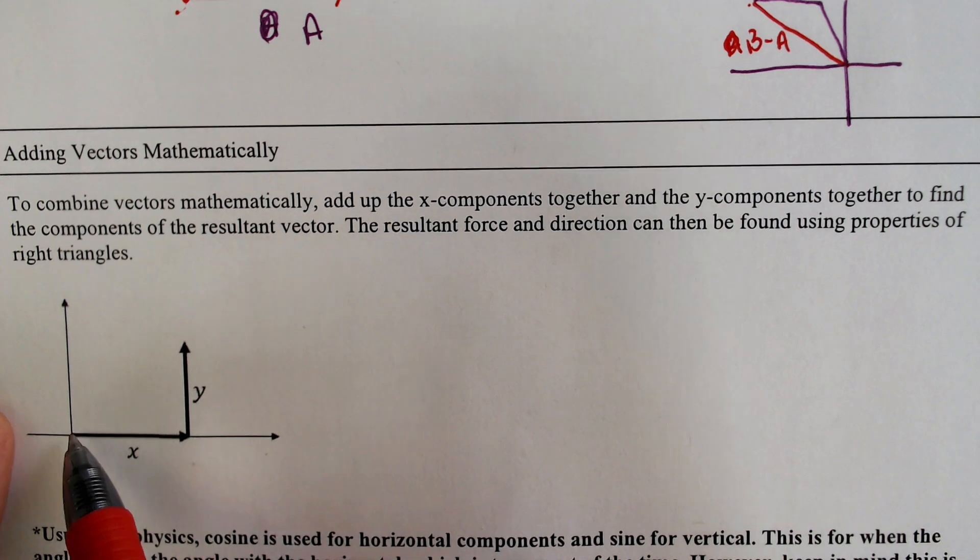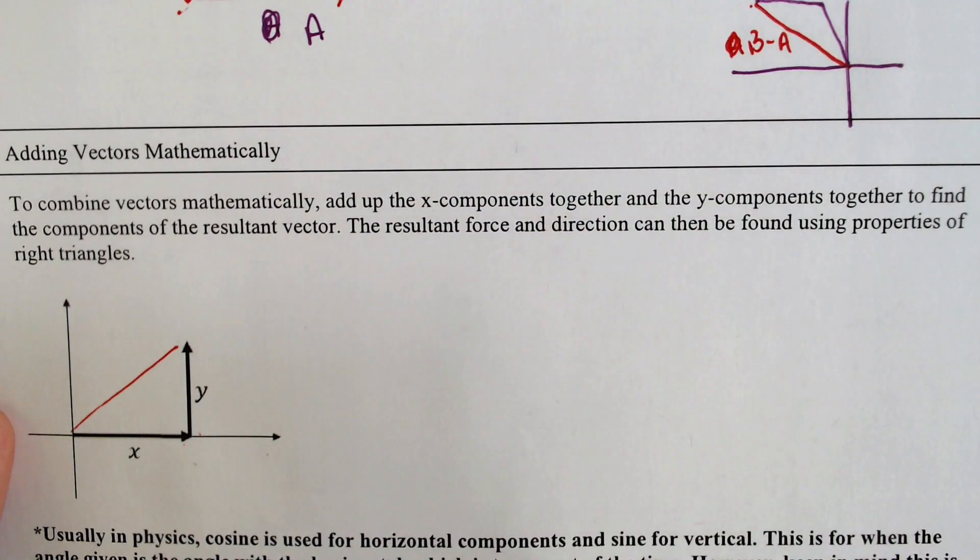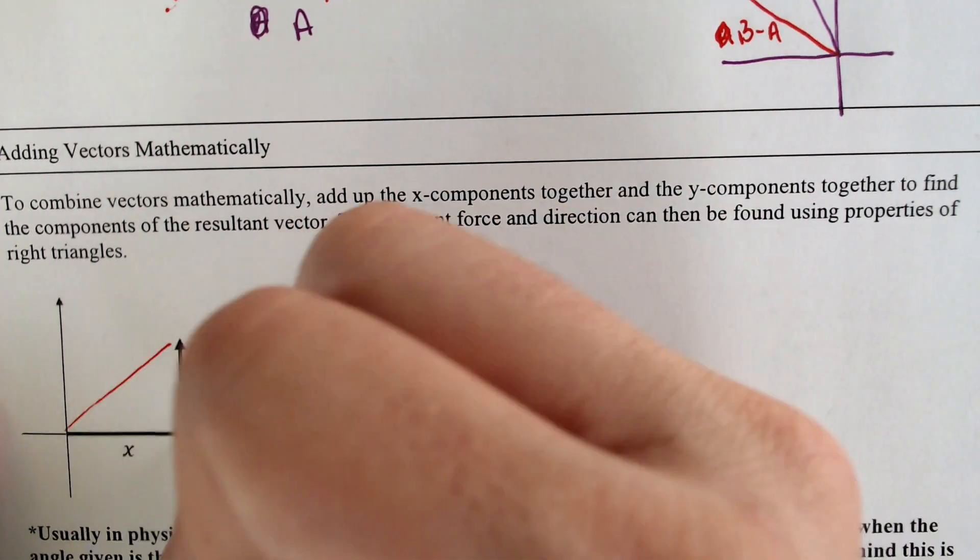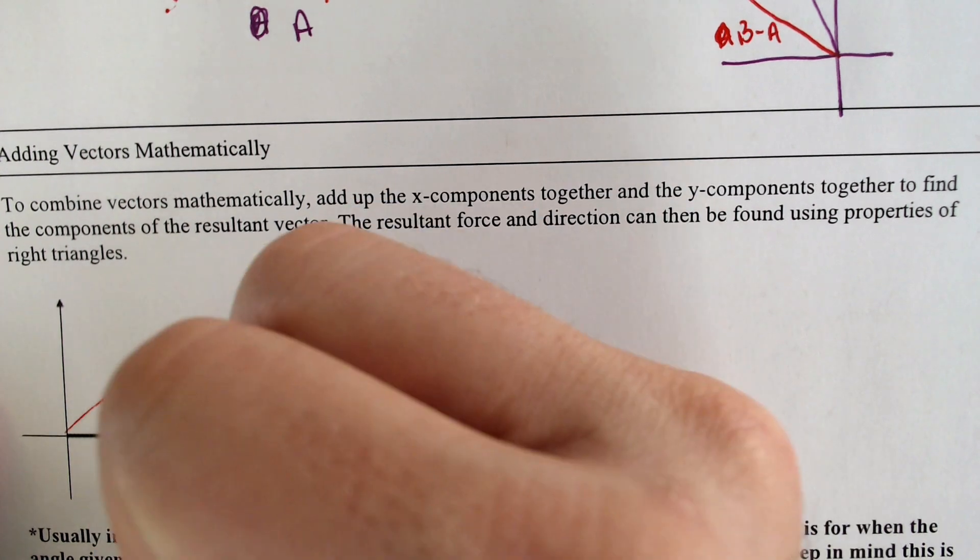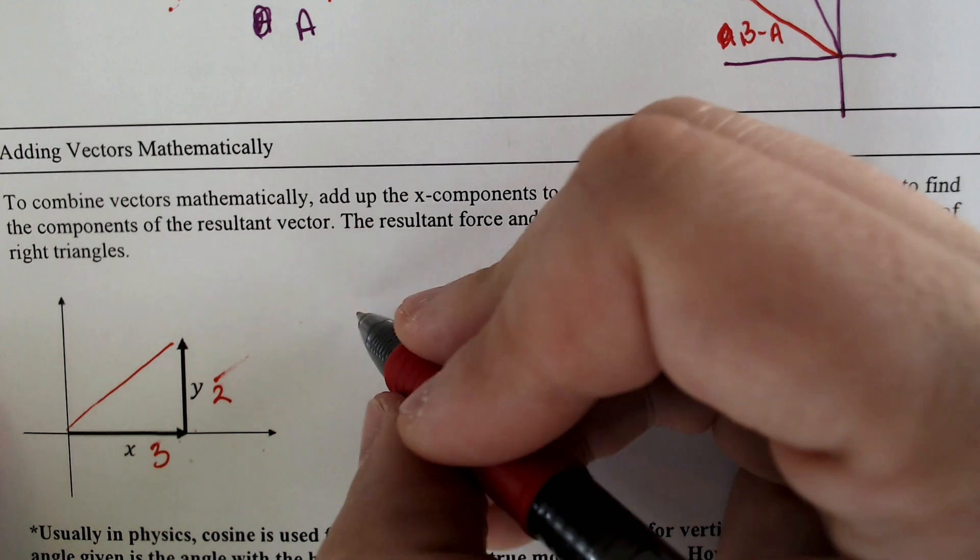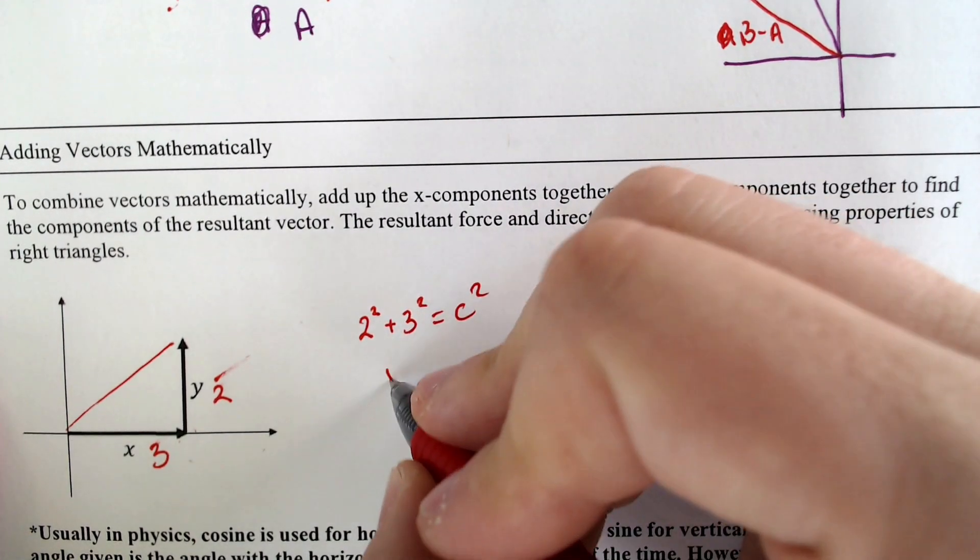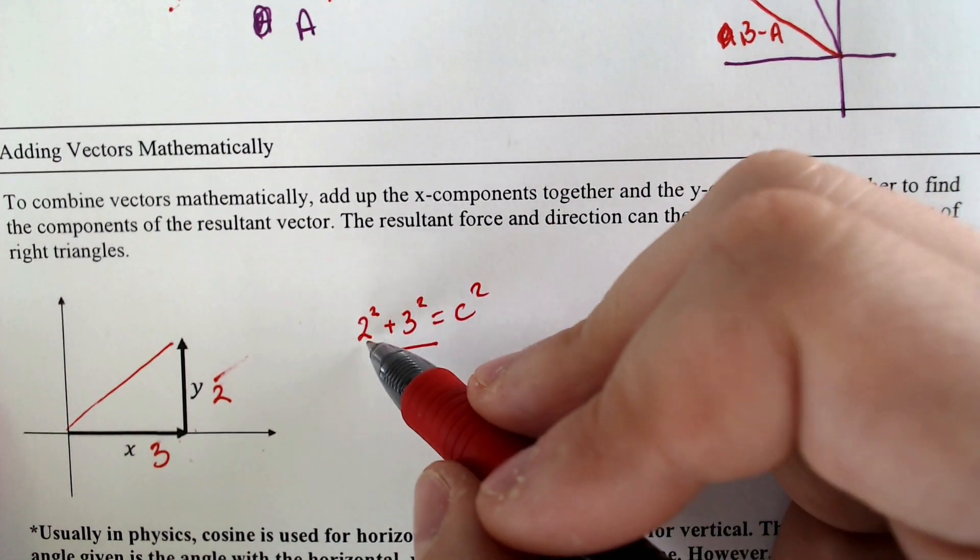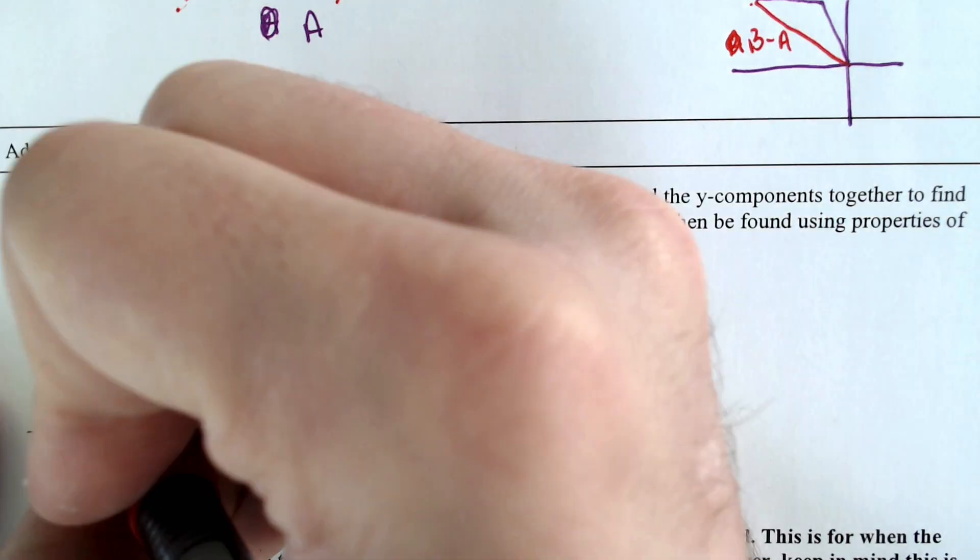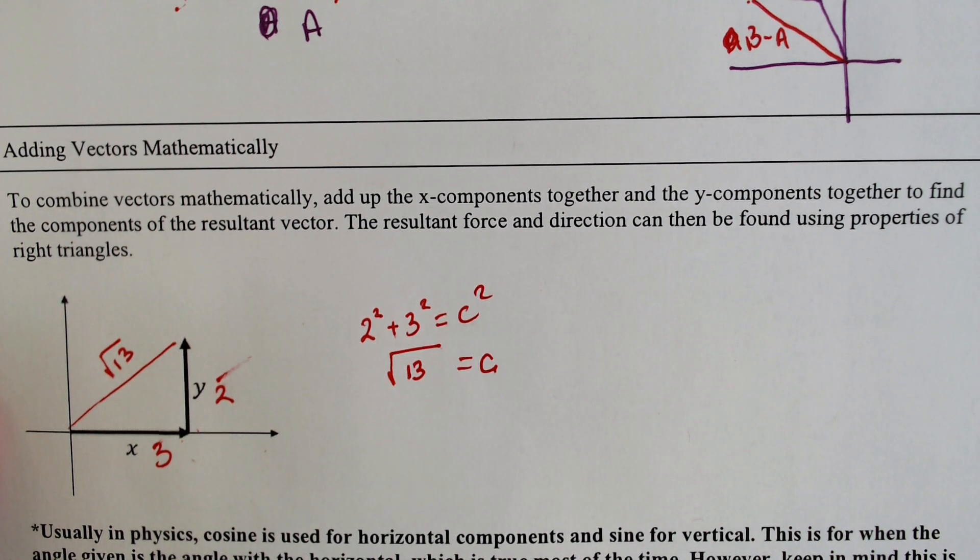And if let's say that this part right here was, I don't know, three and this part was two, what would be the length of the resultant vector? That would just be using your Pythagorean theorem. Two squared plus three squared would equal C squared, which means we would end up with four plus nine, the square root of 13 would equal your C. And the length of the magnitude of that would be the square root of 13.